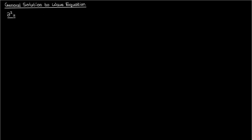Greetings students and welcome back to another lecture on partial differential equations. In the previous lecture we derived the wave equation for a string and gave some intuition about it. In this video we're going to derive the general solution to the wave equation. The wave equation in one dimension looks like this: the second partial of u with respect to t equals c squared times the second partial of u with respect to x. I'm going to label this equation 1.